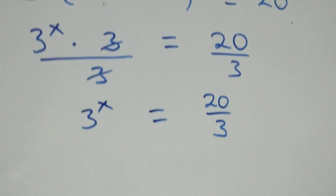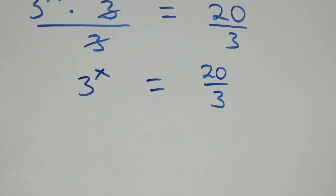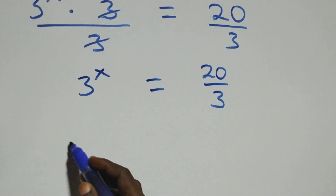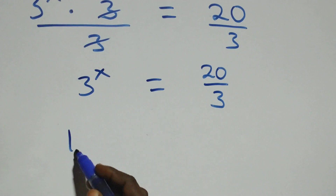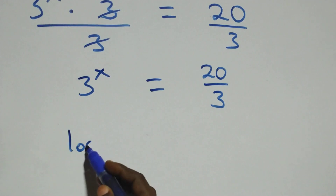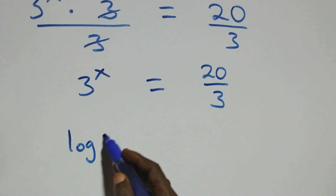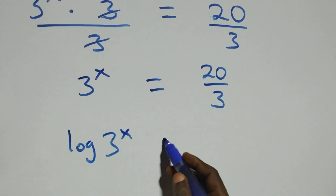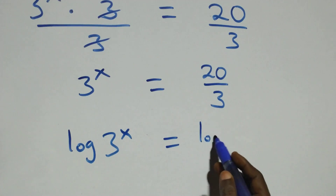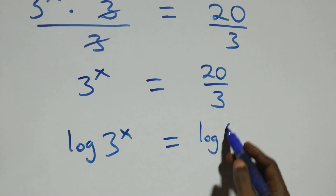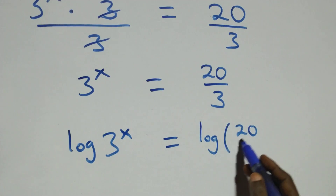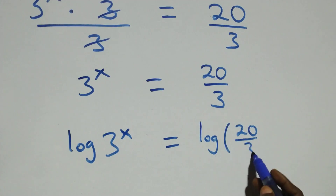The next step: we take the log on both sides. We have log of 3 raised to power x equals log of 20 over 3.